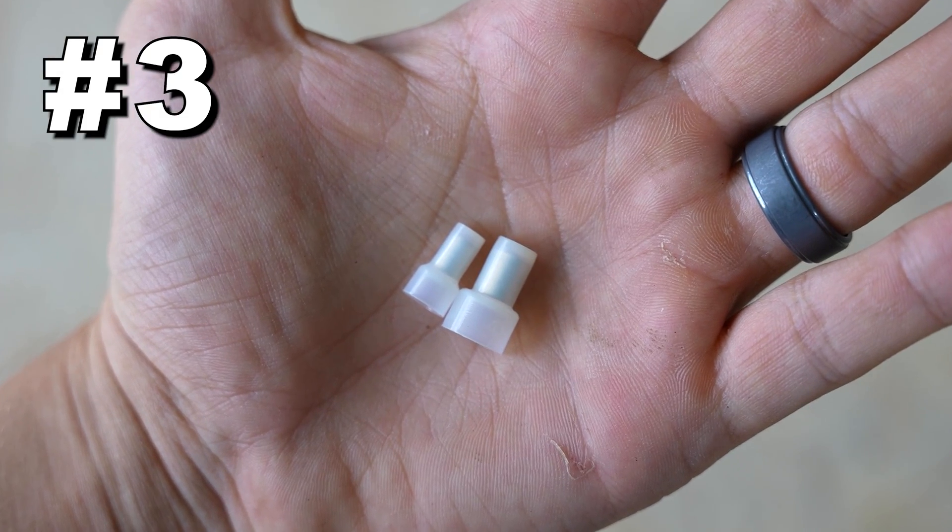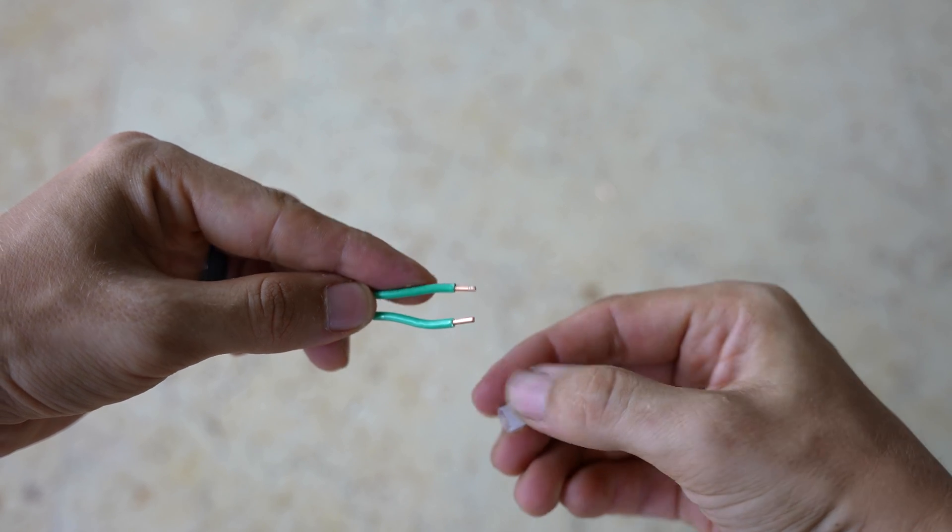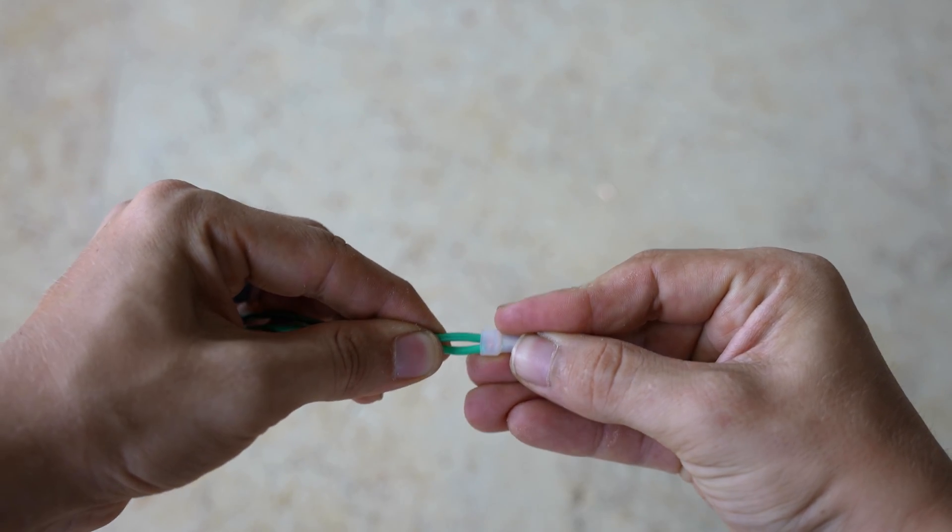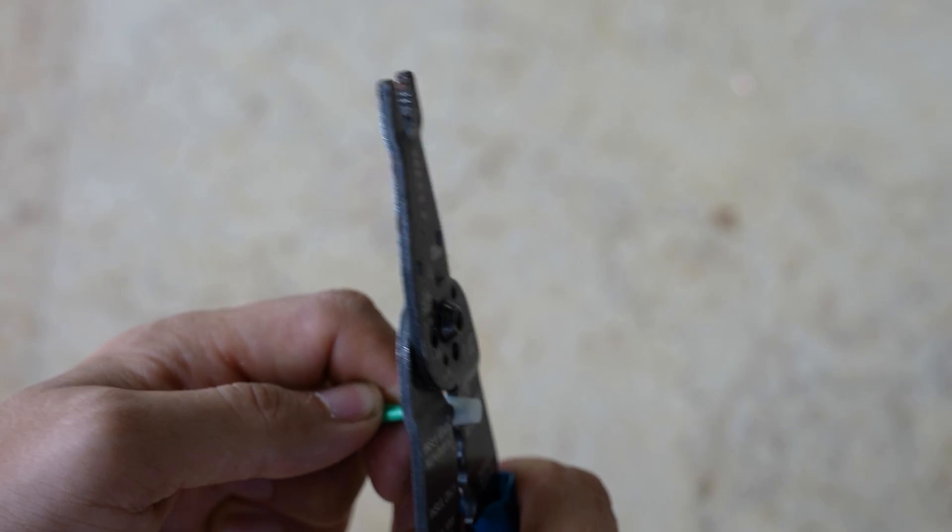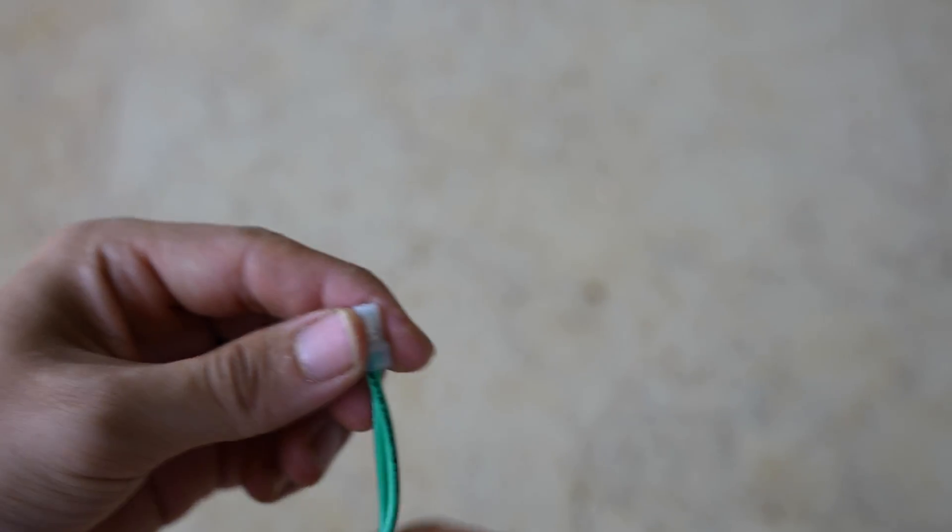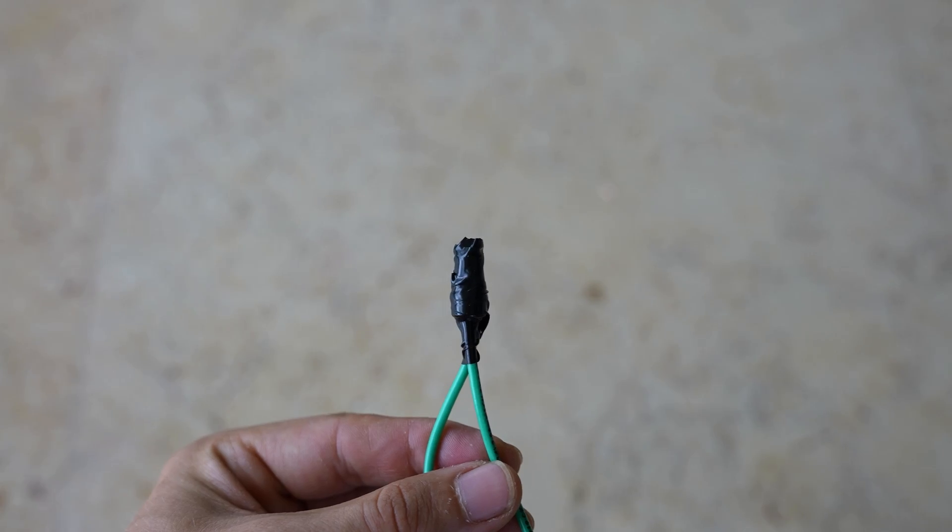Number three is to use a closed end splice connector. This one is very easy. All you need to do is push the wires firmly into the connector and crimp it down. Give it a good tug to make sure the wires are in there securely and give it a round of tape as a nice finishing touch.